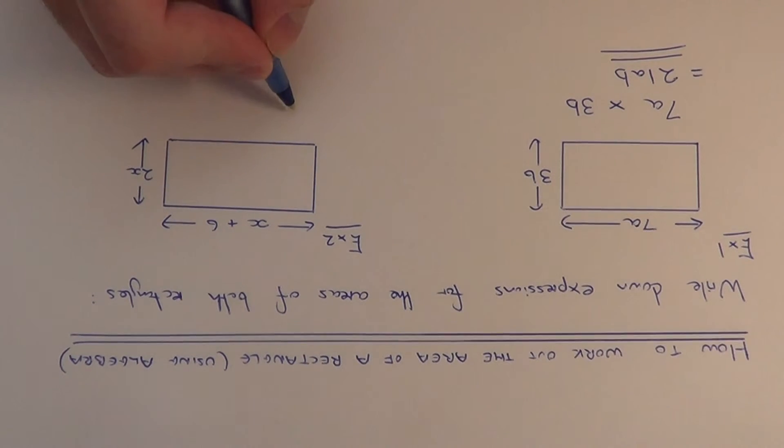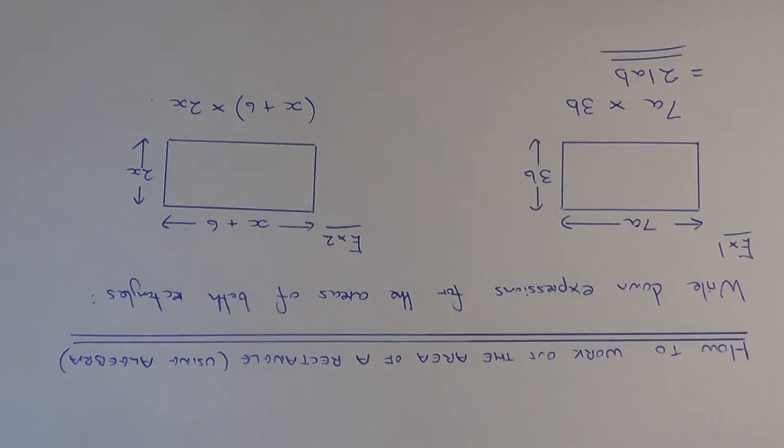We need to do x plus 6. This needs to go in a bracket because the whole thing needs to be multiplied by 2x.